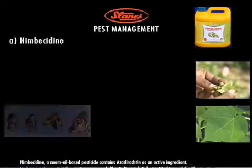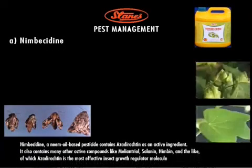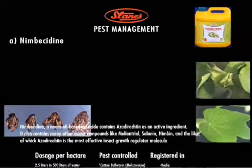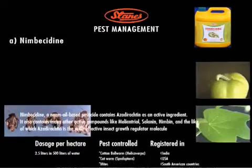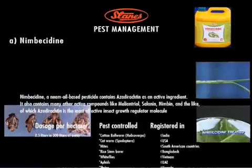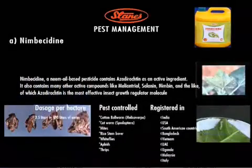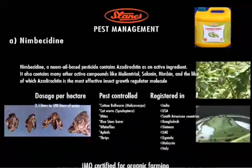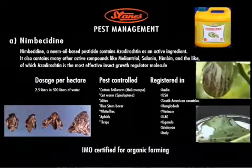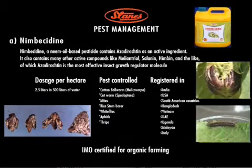Pest management. Nimbusidin, a neem oil-based pesticide, contains azadirachtin as an active ingredient. It also contains many other active compounds like melintriol, salanin, nimbin, and the like — of which azadirachtin is the most effective insect growth regulator molecule.